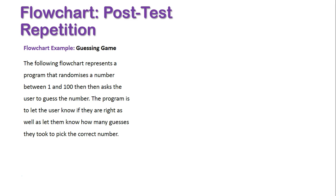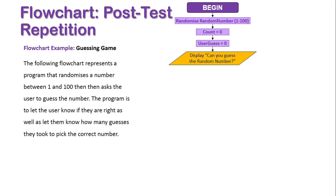Let's look at the same scenario now, but this time in flowchart format. We have our BEGIN terminal, followed by our series of steps: randomize the number, set count to zero, set user guess to zero, display can you guess the random number.